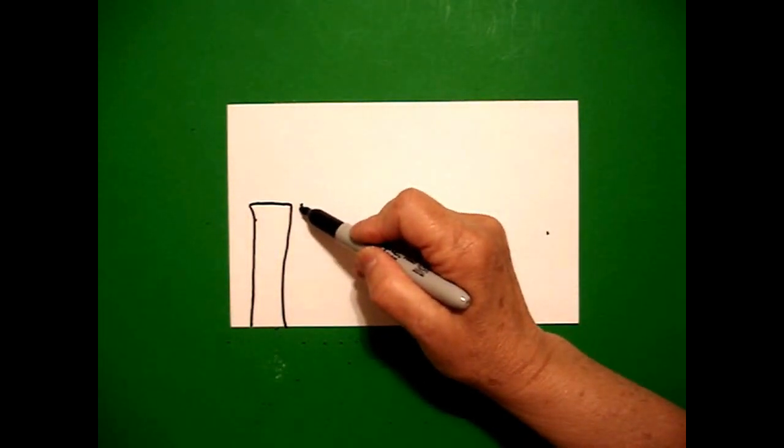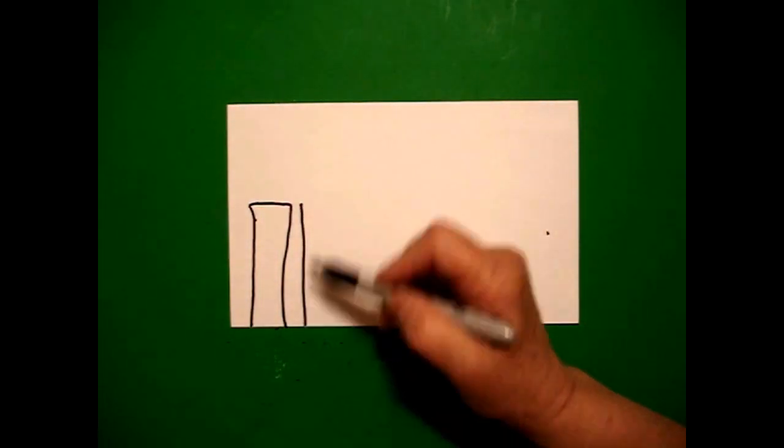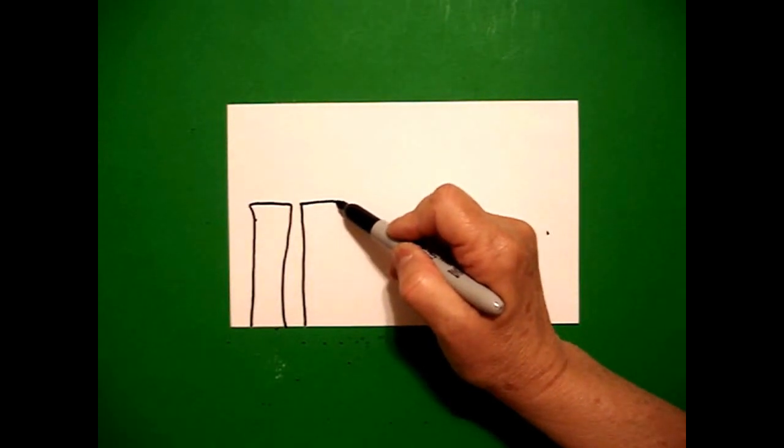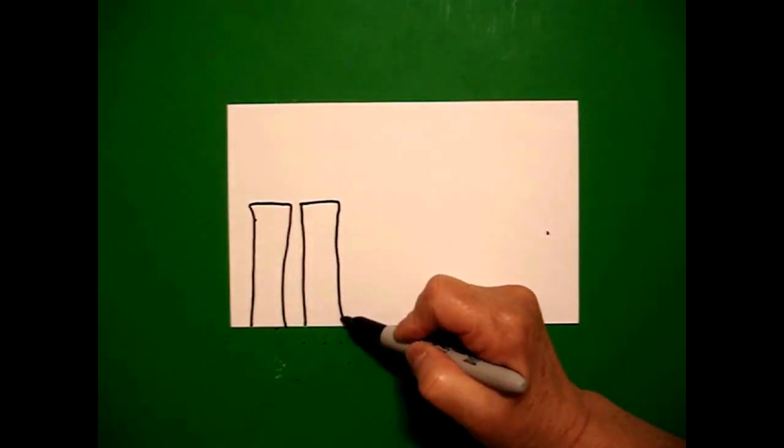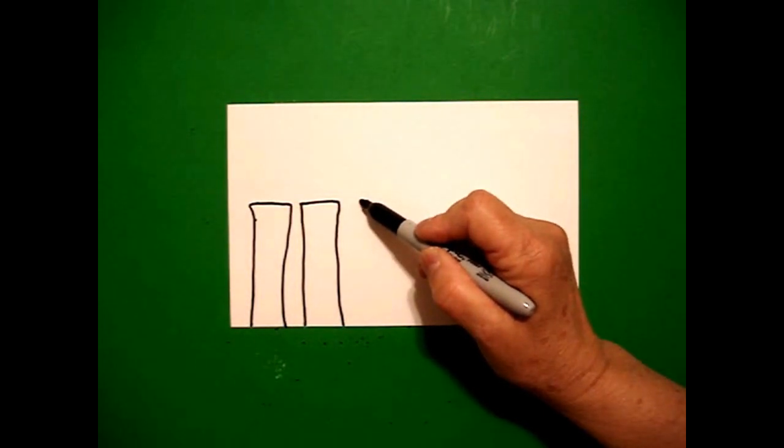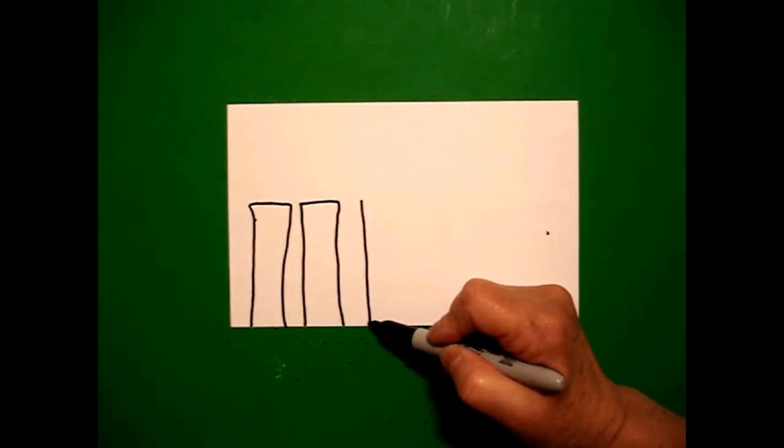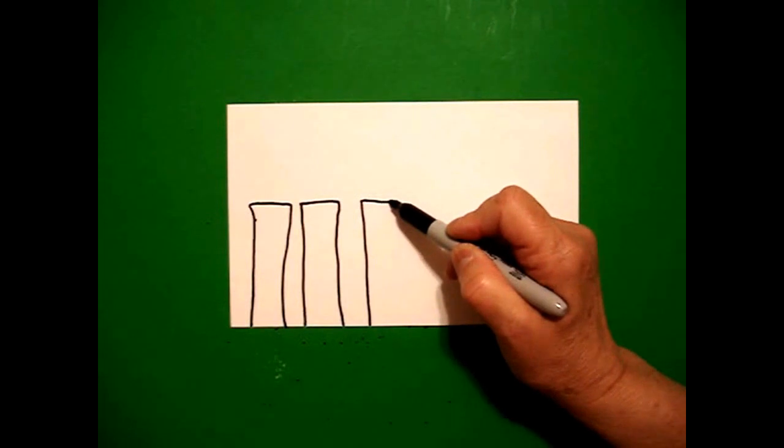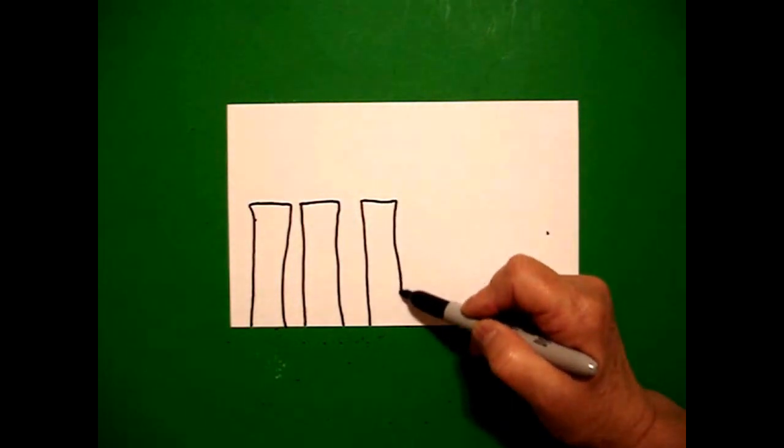Come right next to it, straight line down, straight line over, straight line down. Right next to that one we're making pairs. I'm going to draw a straight line down, straight line over, straight line down.